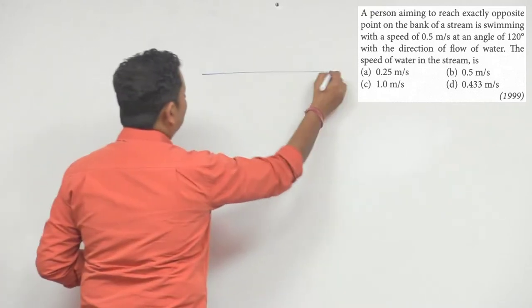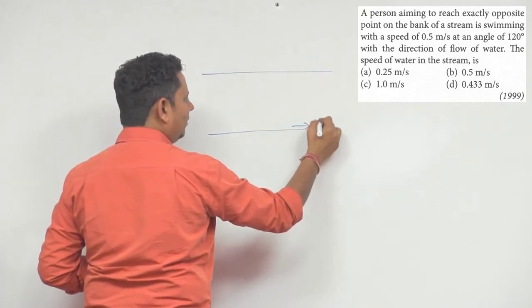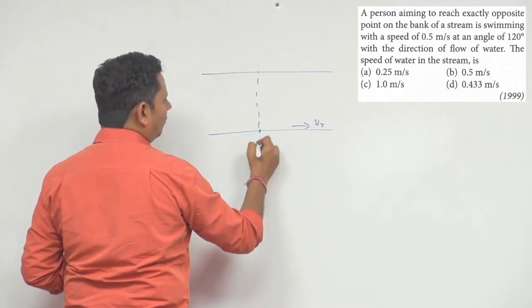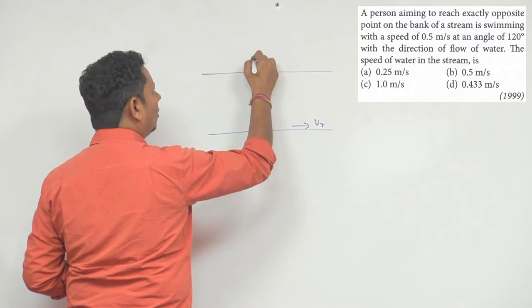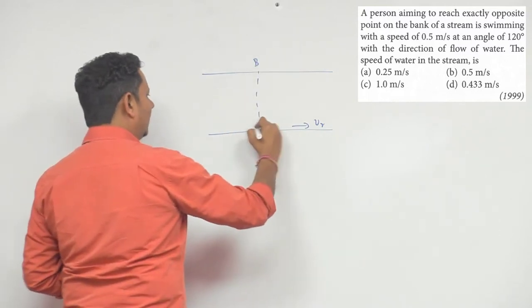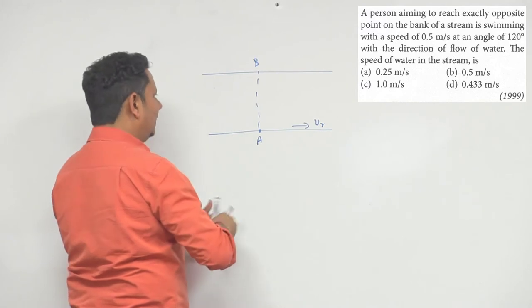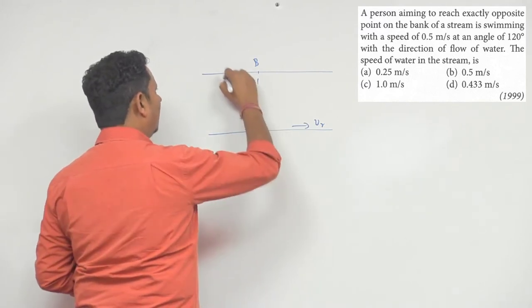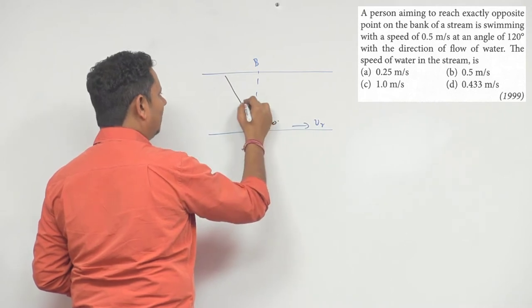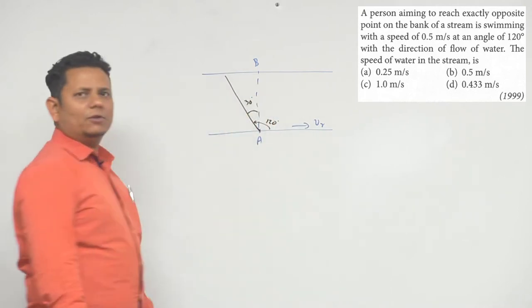So, this is the scenario. A river is flowing, let's say VR is the flow. A man swims from point A to point B, the opposite point. The angle here is 120 degrees, which means this angle is 30 degrees from the shortest path.